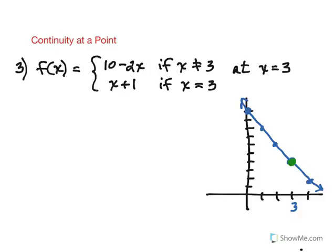So let's take a look at this and how it would work out with the tests for continuity. Remember the first test is that the function value needs to exist. Well in this case the function value of 3 is given by that second piece, so we know that to be 4, which is 3 plus 1.